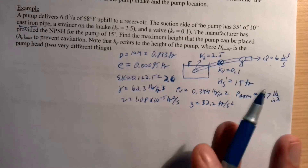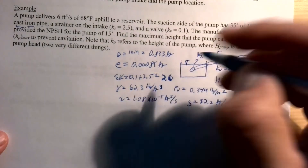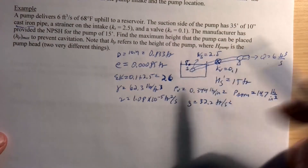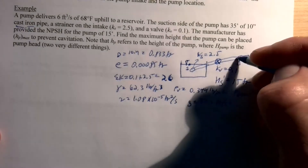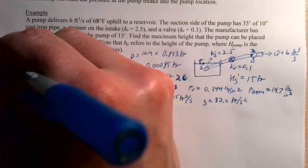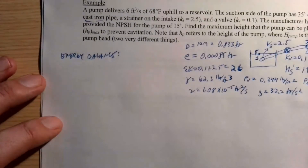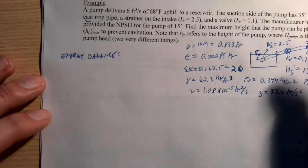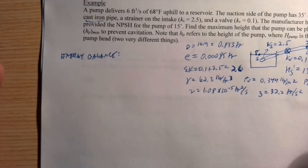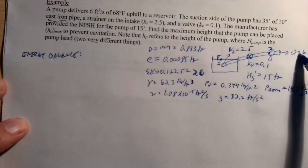To analyze cavitation potential, we'll do an energy balance between point 1 at the water surface and point 2 right before the pump — that's where we're worried about cavitation. Since we don't reach the pump yet, we don't have to worry about it adding energy. We've already determined the flow rate is six cubic feet per second, so we can focus on the cavitation risk.